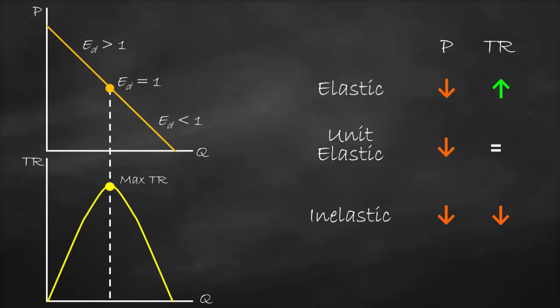Therefore, if you look at our total revenue curve, it will be an inverted U-shape, because of the relationship between price and total revenue across the elastic, unit elastic, and inelastic regions.